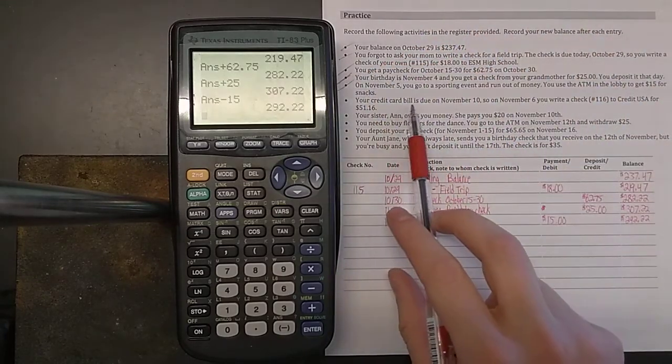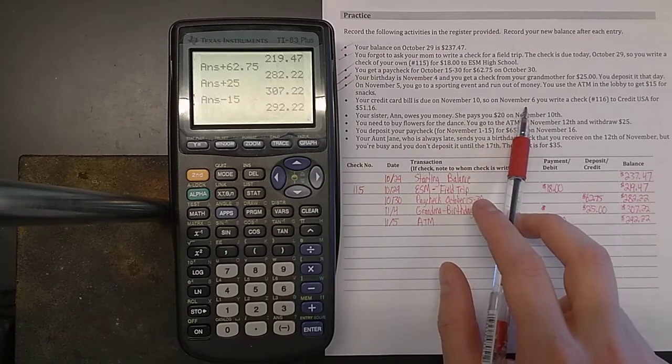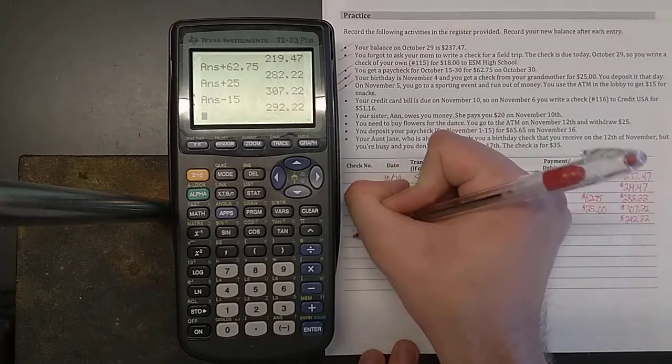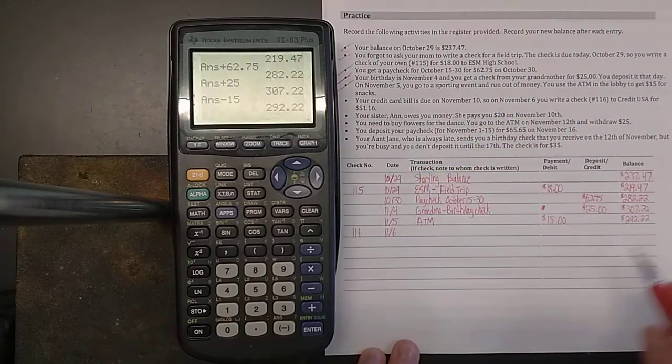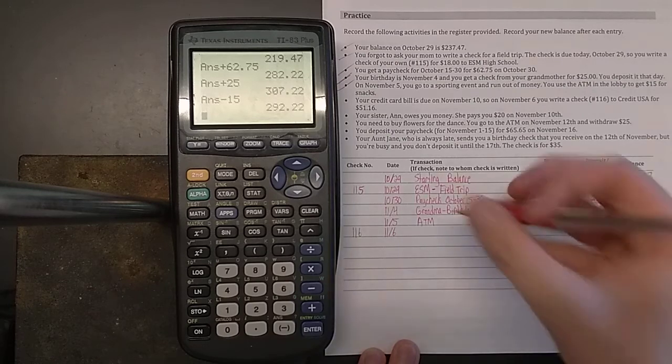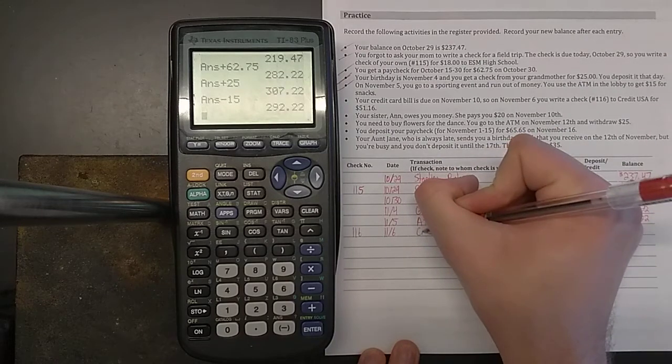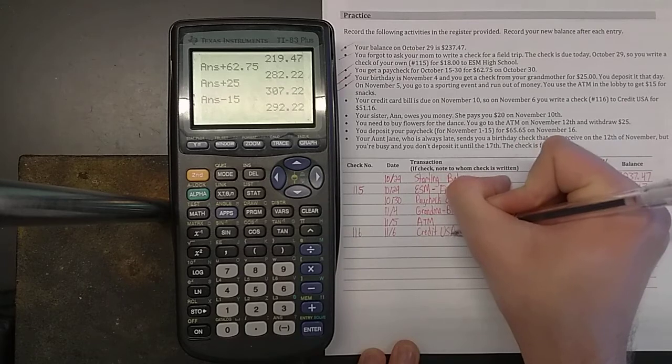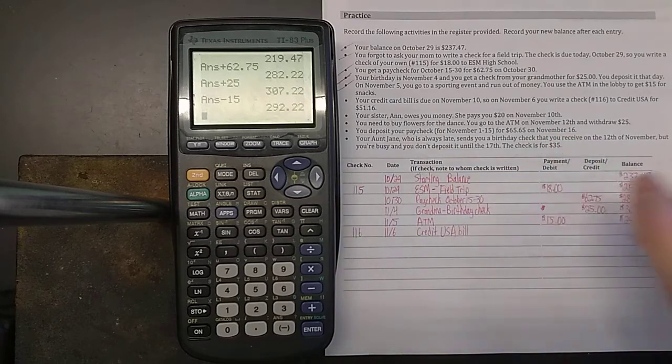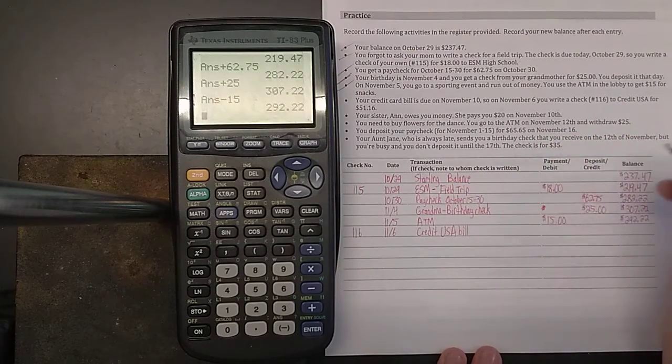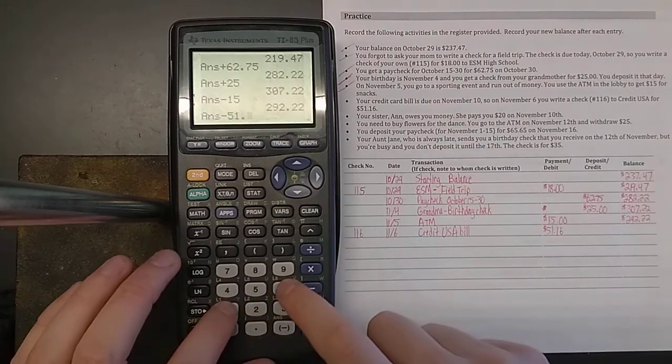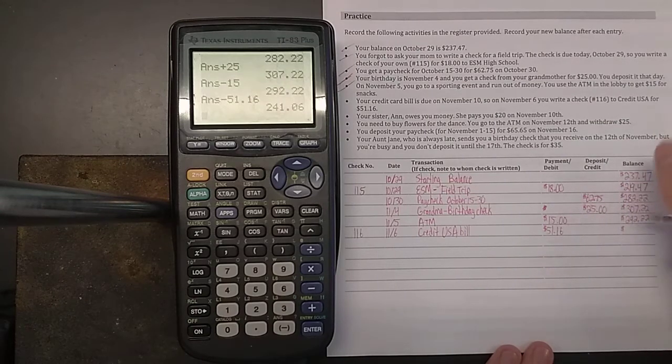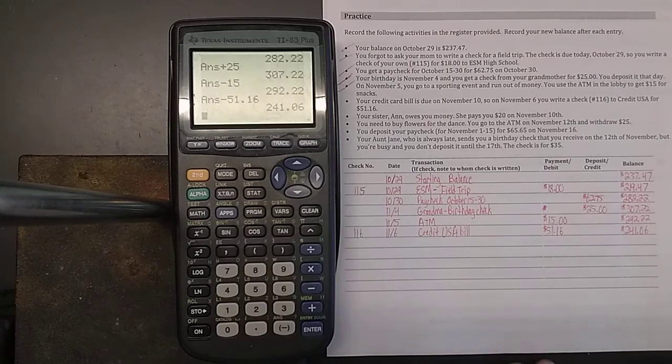Five more. Your credit card bill is due on November 10th. So on November 6th, you write a check number 116. This is on November 6th to CreditUSA for $51.16. So I'm just going to write for the transaction, CreditUSA bill. You were paying them $51.16. So we're going to subtract $51.16 from your previous account balance. $241.06 should be what you're left with.